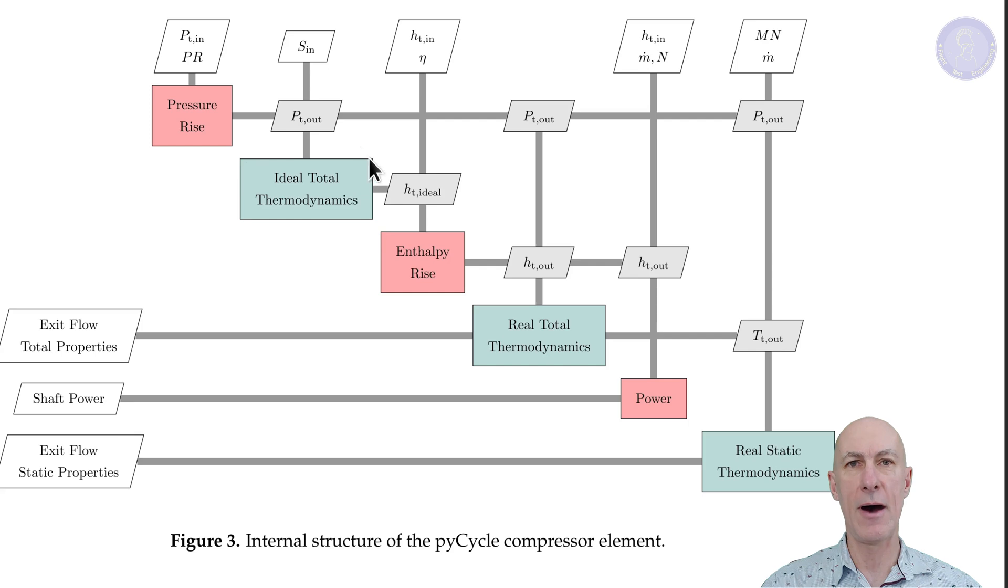Then we have the ideal total thermodynamics. And this block first calculates the ideal condition that will happen at the exit of the compressor. Then we have the entropy rise block, which combines the ideal compressor exit entropy value, the compressor entrance entropy value, and its efficiency to get what the entropy value of the gas is really going to be, as opposed to the ideal entropy that we had before.